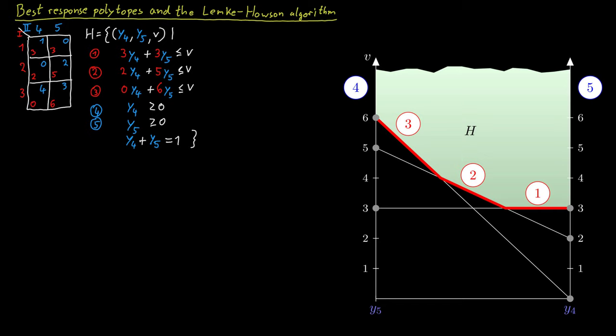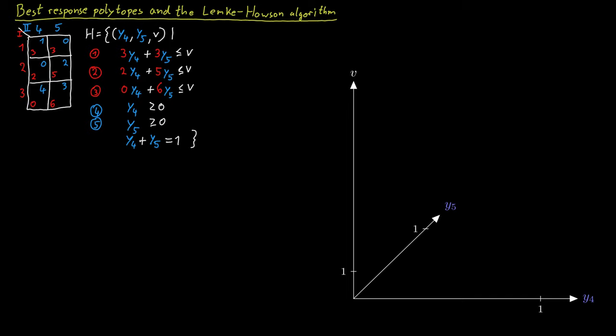Lastly, we have conditions for Y4 and Y5: since those are probabilities, they shouldn't be negative, so both values should be at least zero. And because they are probabilities, they should sum up to one. This fully describes the set H. We see that to describe H we used three numbers rather than two, so these points actually live in a three-dimensional space. We can draw it in that three-dimensional coordinate system with axes Y4, Y5, and V.